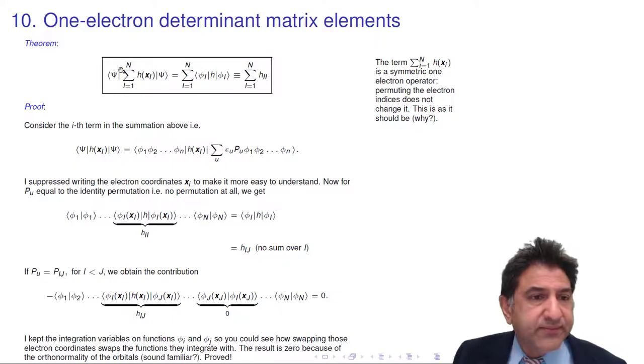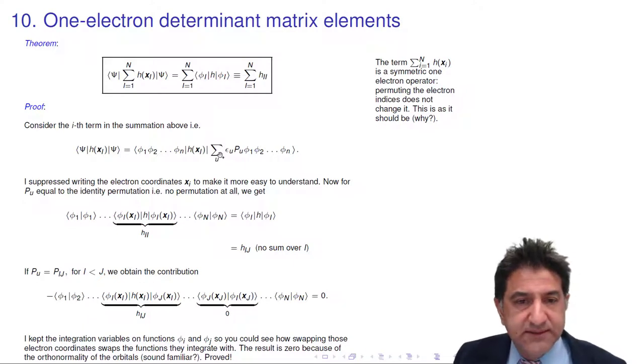Let's see how we can prove this. Proof. Consider just the ith term in this summation first, not the sum over n, but just h of xi. So here I've put it in the middle: psi h of xi psi, no summation. Let's use our previous result. Anti-symmetrizer on the left, anti-symmetrizer on the right. We don't need it on the left, so we'll write our product of orbitals on the left. And on the right we have the anti-symmetrizer, except for its normalization factor.